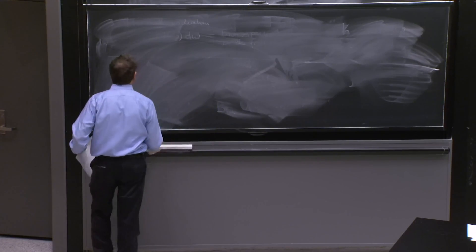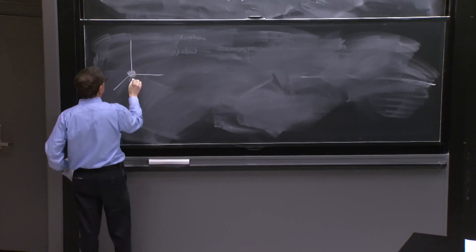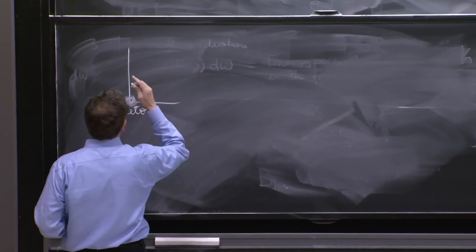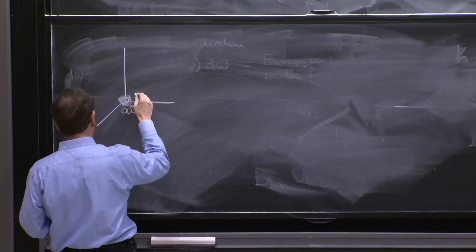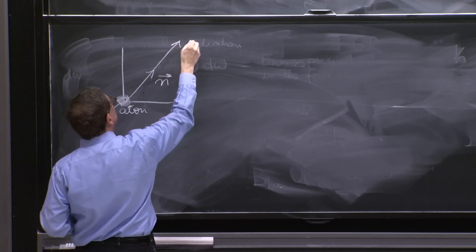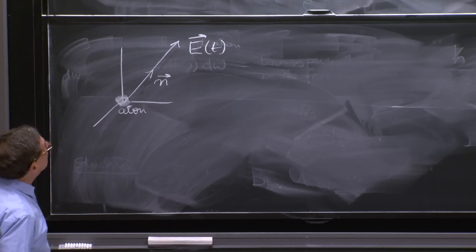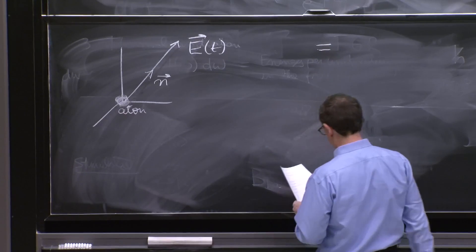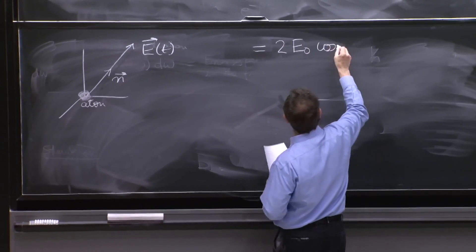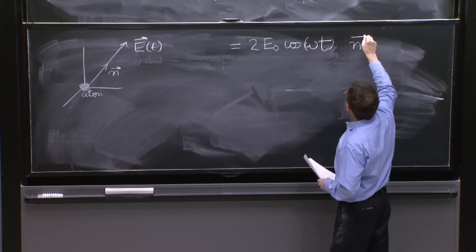So this picture is of an atom sitting here, and in particular its electron, which is the particle that reacts the most to the electric field. There's a unit vector n and there's E of t. So the electric field E(t) is 2E0, in our conventions, cosine(ωt) times the vector n.